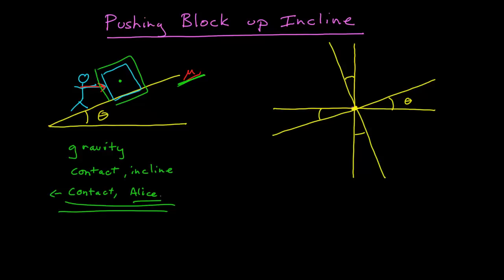Now I have some axes, and I want to identify the forces. First, the force due to gravity — that points straight down, always. There's the force due to gravity; we give it clearly identifiable notation. There's a contact force due to Alice, and we're told she pushes horizontally, so that is a horizontal force pointing to the right. I'll call that P vector for pushing force. I'm not going to break that into normal and frictional components because I'm given that she's pushing horizontally with some magnitude, so I'll keep it in its original vector form.